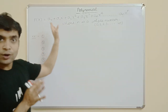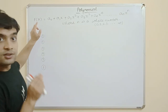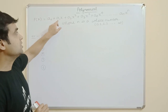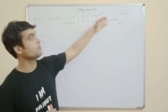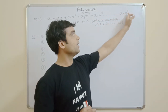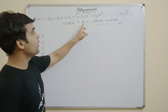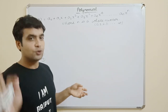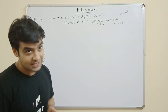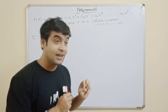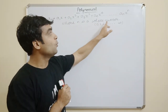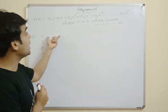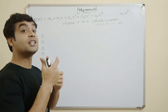I have written the general expression of a polynomial here. You can see: p(x) = a0 + a1x + a2x² + ... + anx^n, where n is a whole number. This is the standard definition of a polynomial. Now let's look at examples to understand which algebraic equation is a polynomial and which is not.